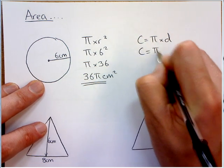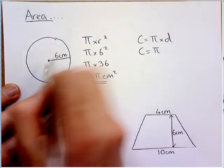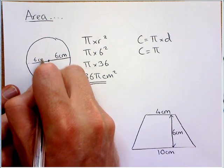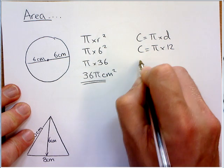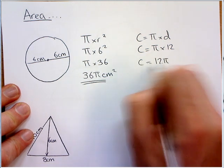So, in this case we don't have the diameter but we can work it out because you should know a diameter is two radii, two radiuses basically. So that's going to be 12, so the circumference would be 12 pi.